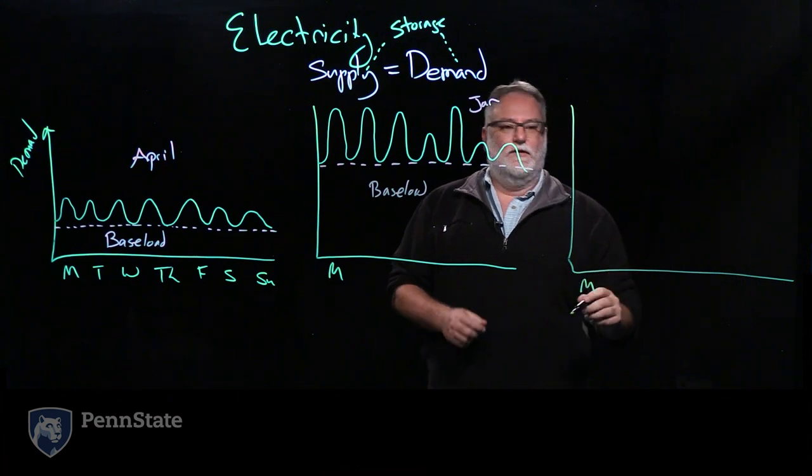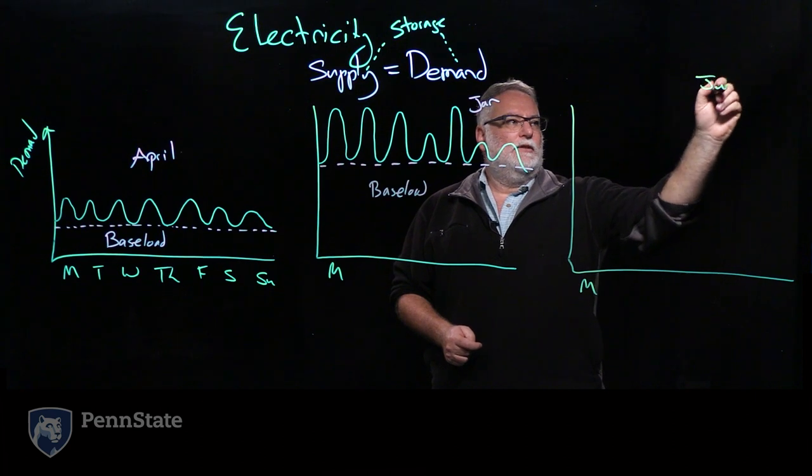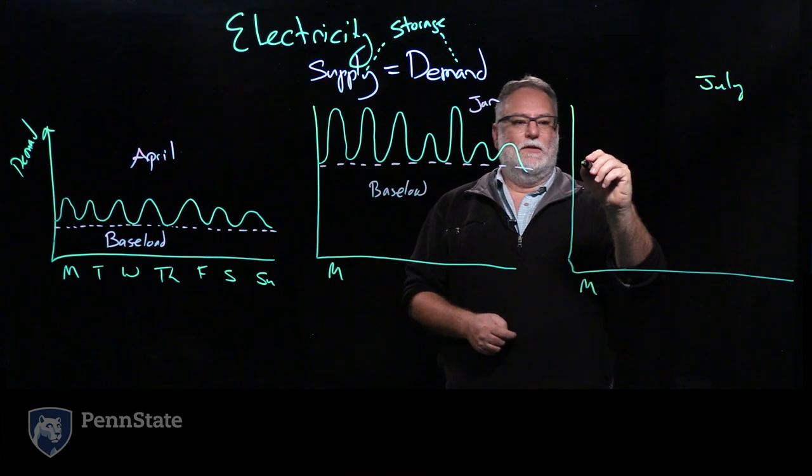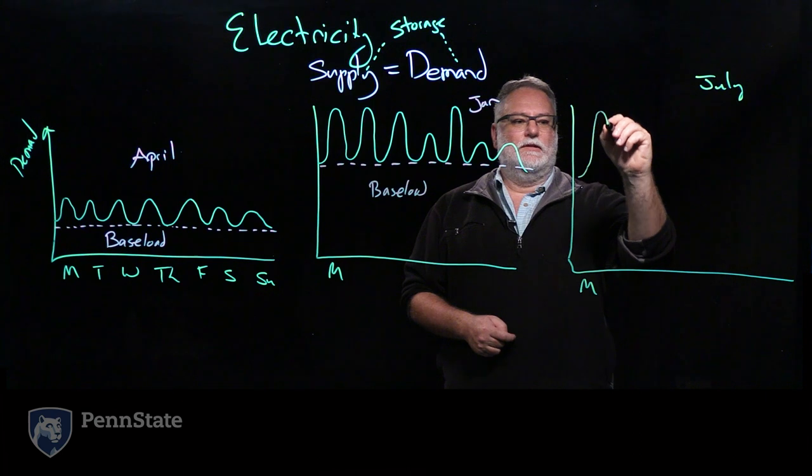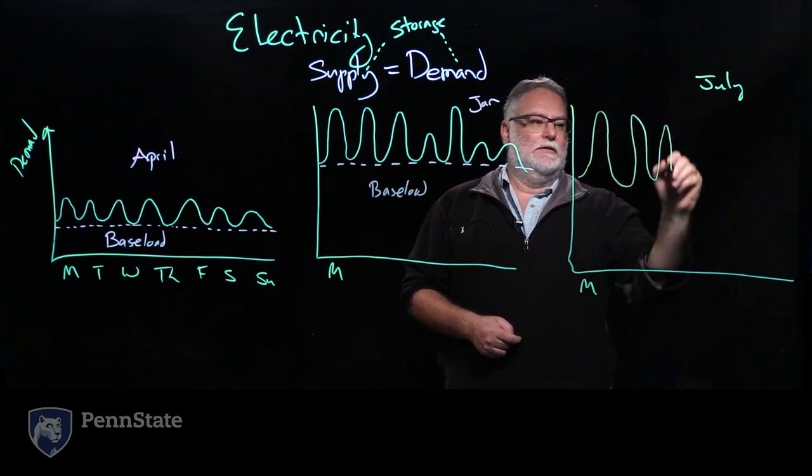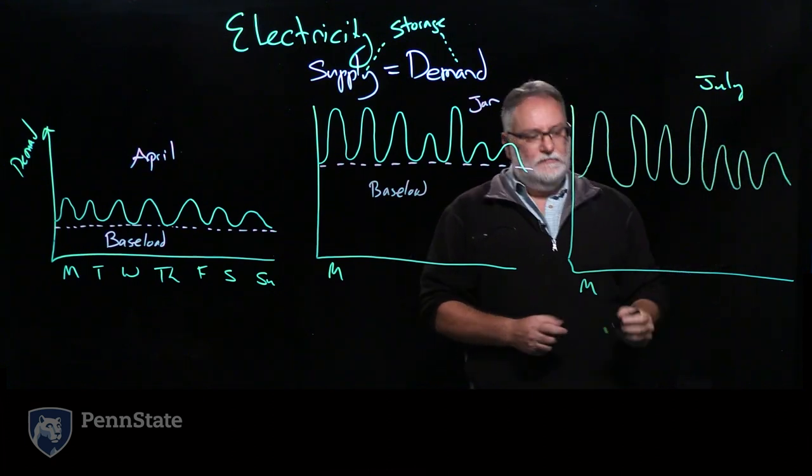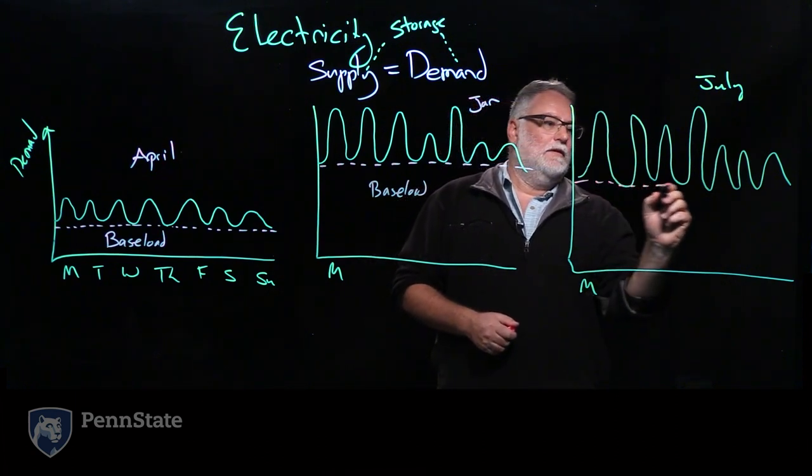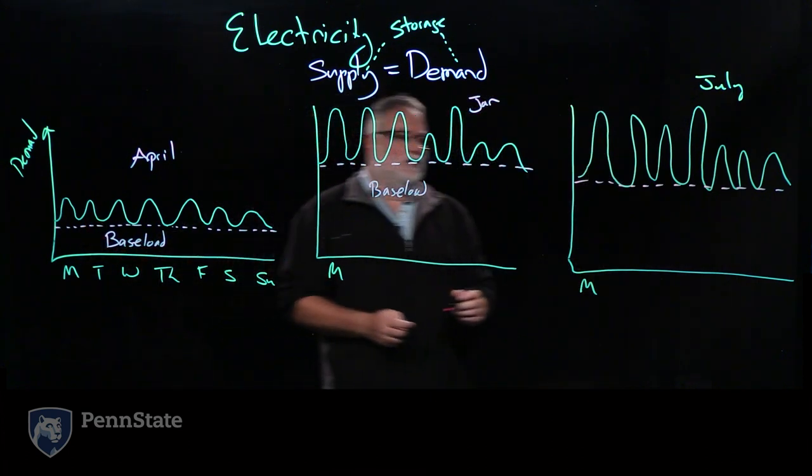If we do this for the summer - let's say July, which is hot and humid and a bit rotten in State College - we're going to see very large peaking. Maybe there's a hot day, maybe there's a cooler day. And we have a base load that is also much higher than the base load we had over here.